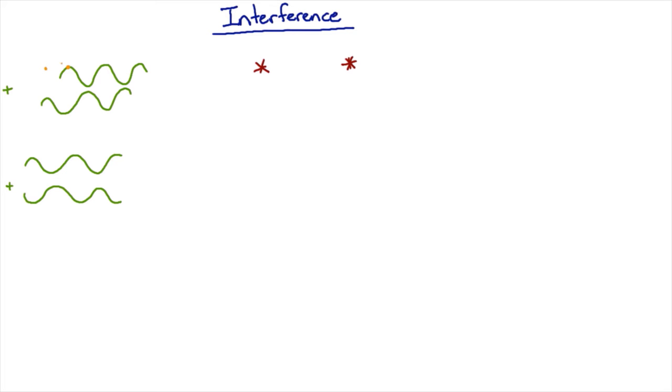Well, this distance here from peak to peak is a wavelength, and so this distance here must be half that. So this is half a wavelength.